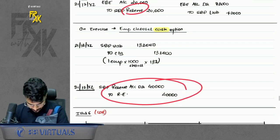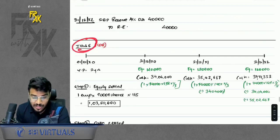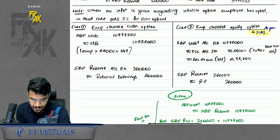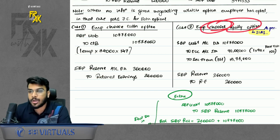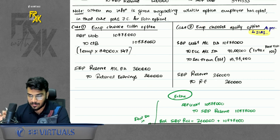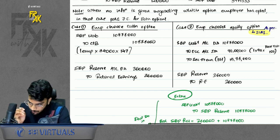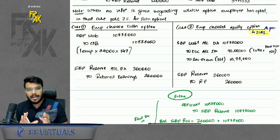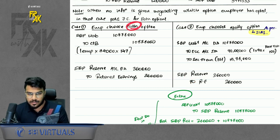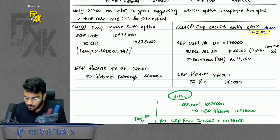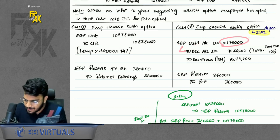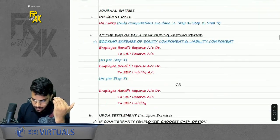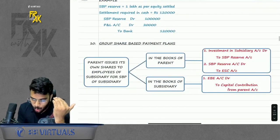If incremental equity is zero or negative, no equity accounting is required. If the employee chooses cash, reverse the liability and pay cash; transfer remaining SBP reserve to retained earnings. If the employee chooses equity, reverse the liability, issue shares crediting capital and premium, and transfer remaining SBP reserve to retained earnings.